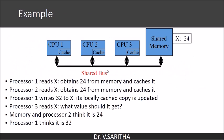Let us consider this example. Say the shared memory has variable x with value 24. First, CPU 1 reads the data x from shared memory, so CPU 1 will have x equal to 24. Then processor 2 reads the data from shared memory and also reads x as 24.